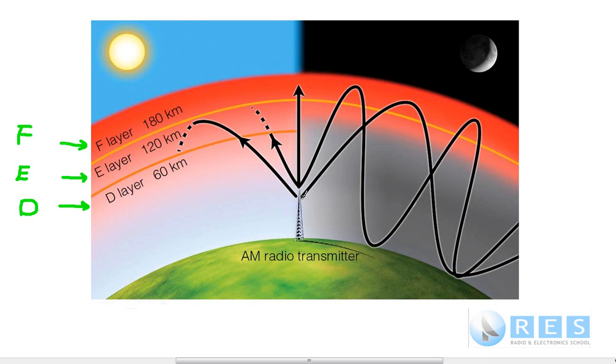If a radio wave is refracted, like this one is being refracted at nighttime, it's being reflected off the Earth and then refracted again. It would go back to the ionosphere and be refracted again. Let's have a look at this one.